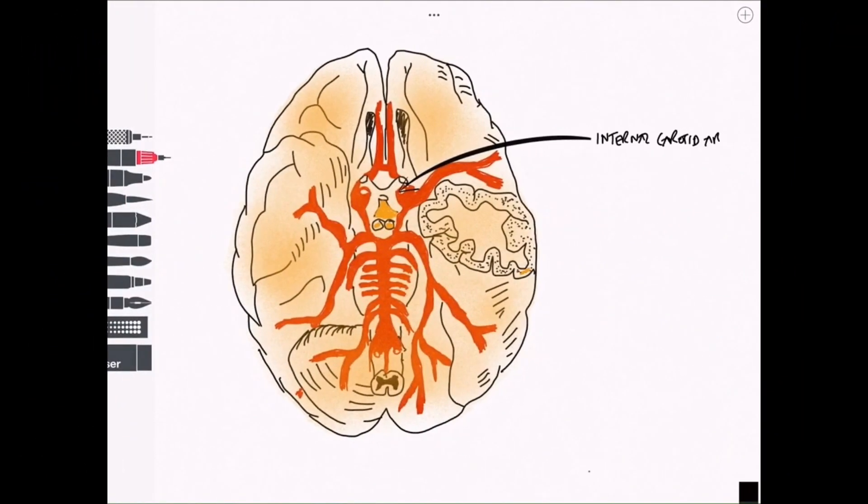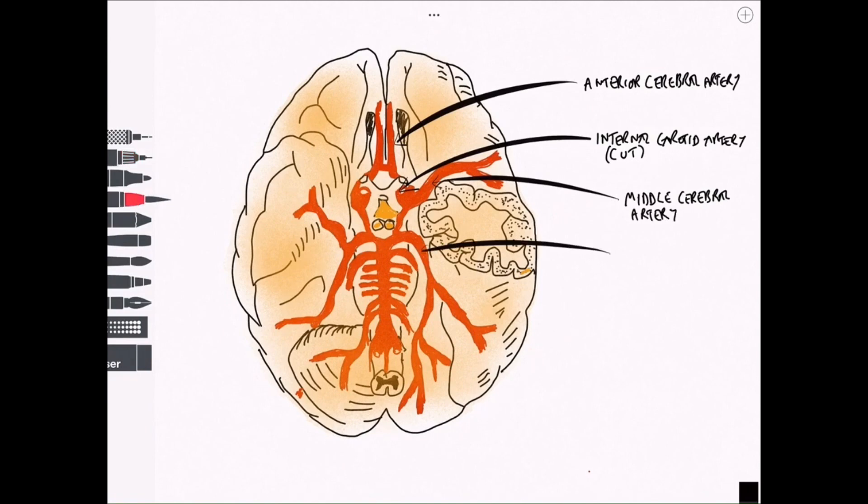So here we can label the internal carotid artery. This has been cut here and we can see a number of vessels coming from there. We'll start with the anterior cerebral artery. This runs on the medial aspect of the cerebrum and the next one is going to be the middle cerebral artery. This is the largest of the three cerebral vessels with the largest territory.